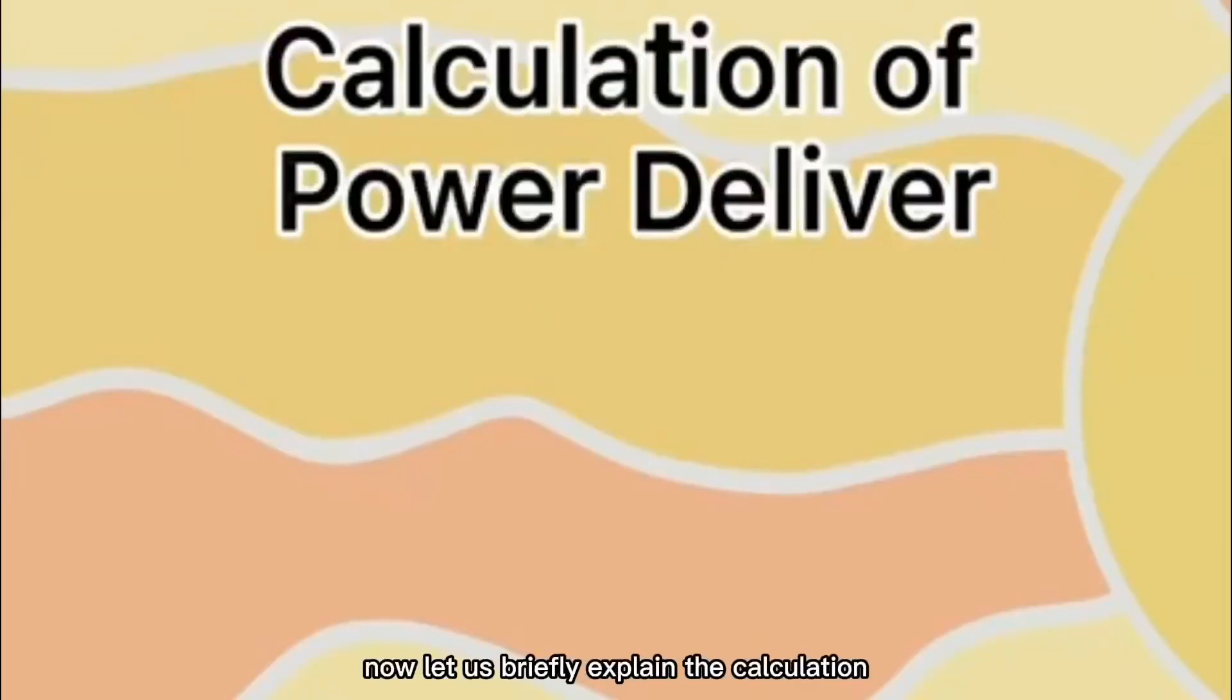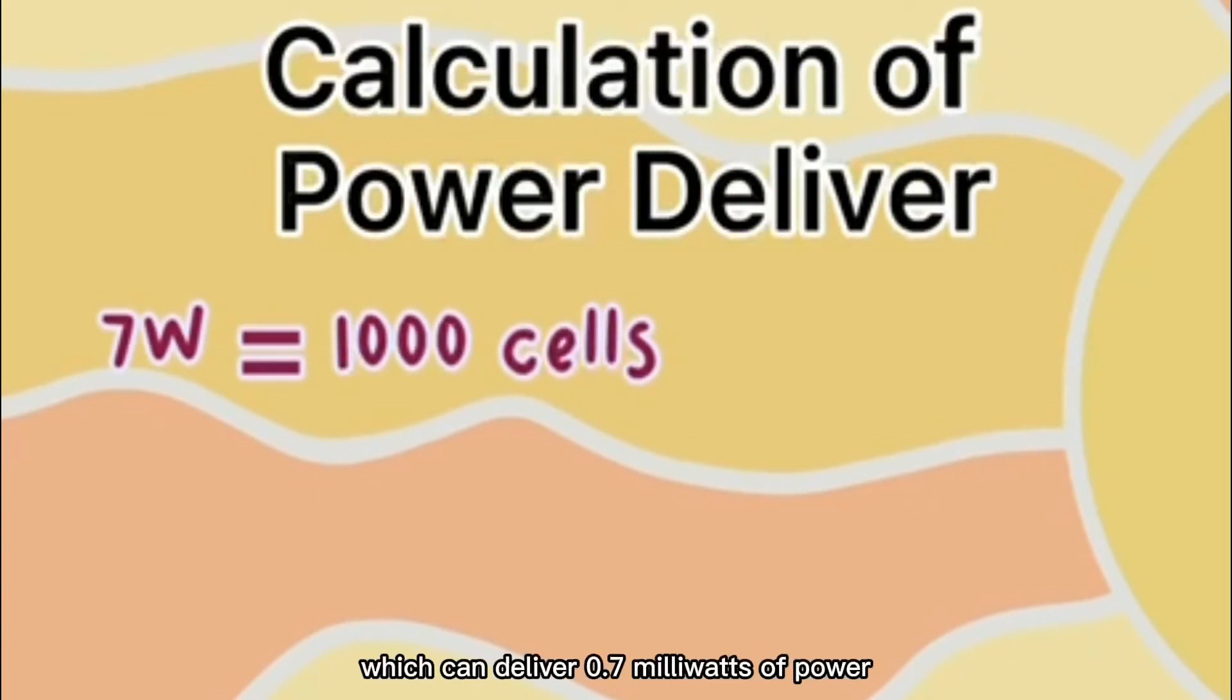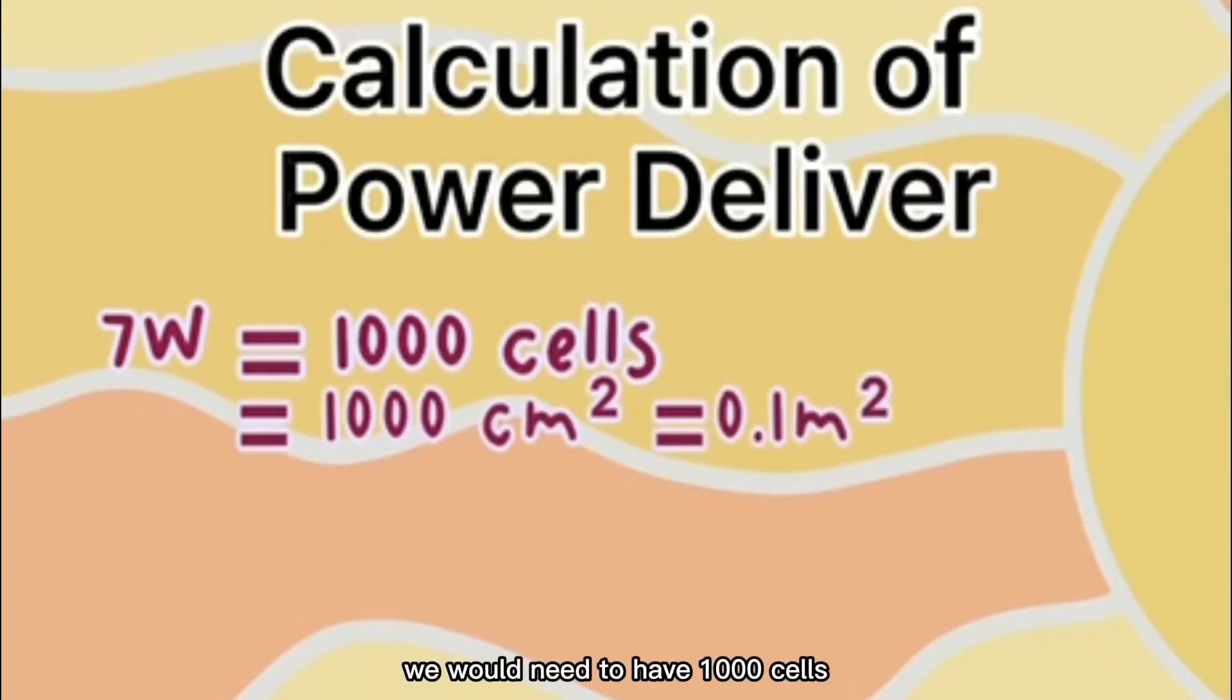Now, let us briefly explain the calculation of the power delivered by the DSSC. Our sample size is 1 by 1 centimeters, which can deliver 0.7 milliwatts of power. To give an output power of 7 watts, we would need to have 1,000 cells, which roughly translates to an area of 1 by 0.1 meters.